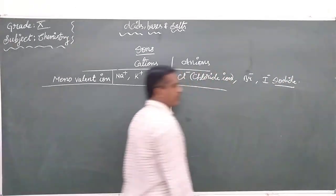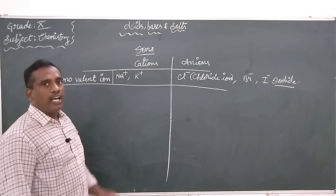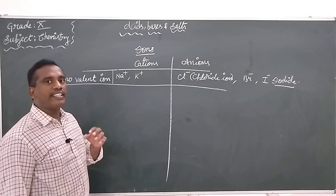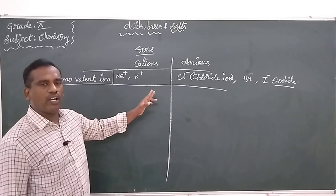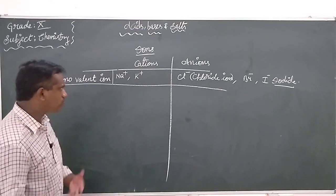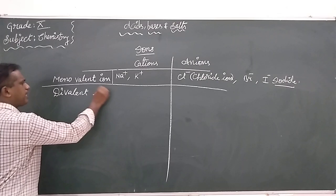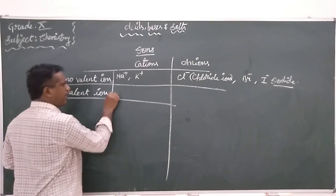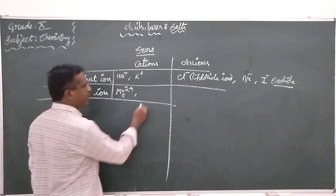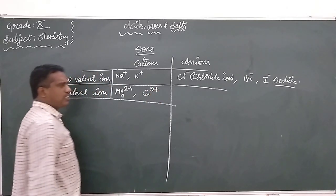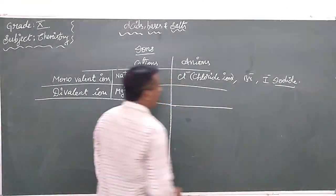These are all having only one charge — if it is a positive cation or a negative anion. If the charge is an even number, it is called a divalent ion. For example, Mg2+ is a divalent ion, and Ca2+ is also a divalent ion.